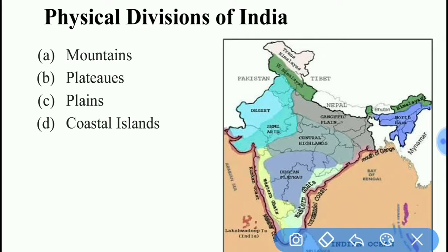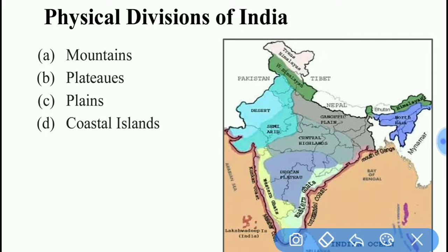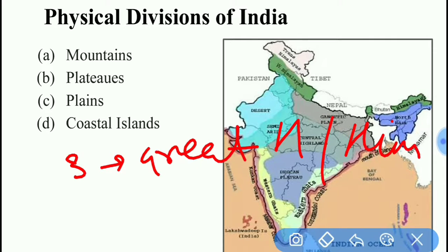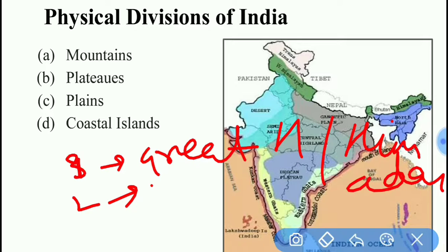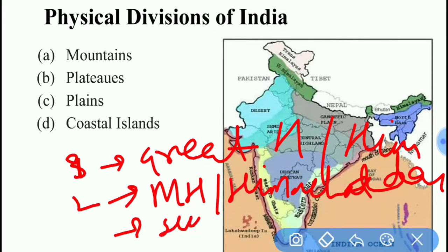The Himalayan mountain region, in the literal sense, refers to the Himalayas. Although the peaks of the Western Ghats and Eastern Ghats can also be categorized as mountains. The Himalayas have three different ranges: the first is the Great Himalayan or Himadri; the second is the Middle Himalayan, also called the Himachal Himalayan; and the third is called the Siwalik Himalayan.